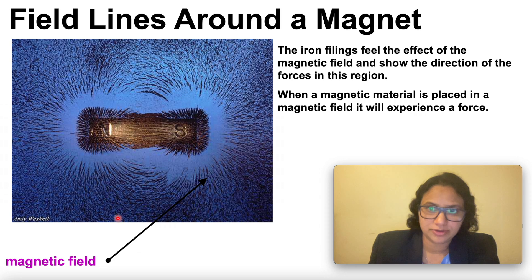As you can see here, the iron filings feel the effect of the magnetic field and show the direction of the forces in this region. The magnetic field is greatest at the poles.